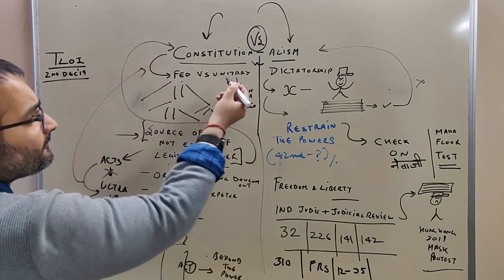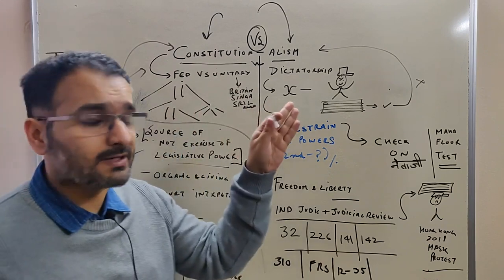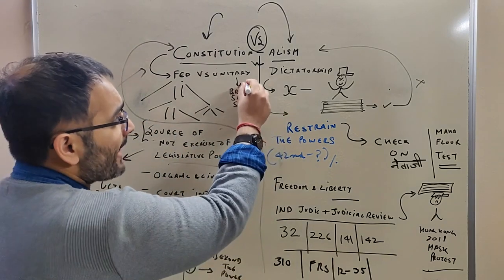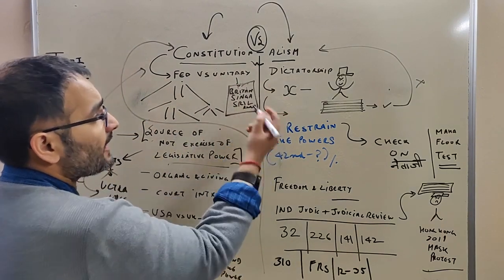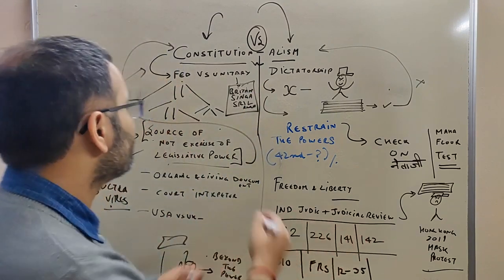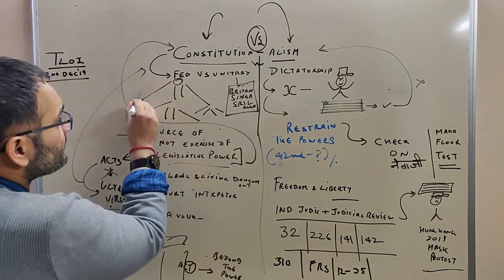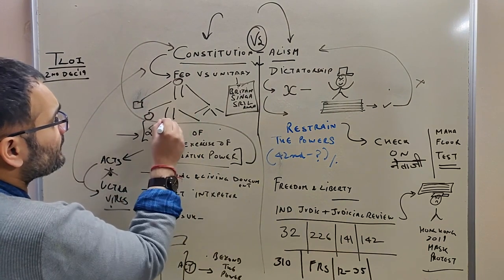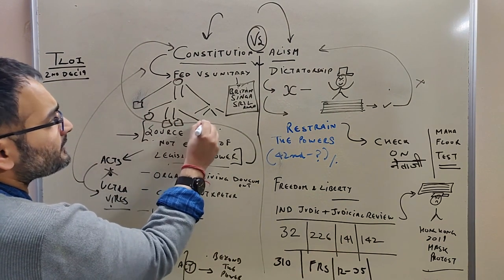And then Constitution is obviously of two types: federal versus unitary. Unitary examples you mention are Britain, Singapore, Sri Lanka. Federal is of course the U.S. Constitution, where from the center to the states, everyone has different jurisdictions, everyone has their own territories.